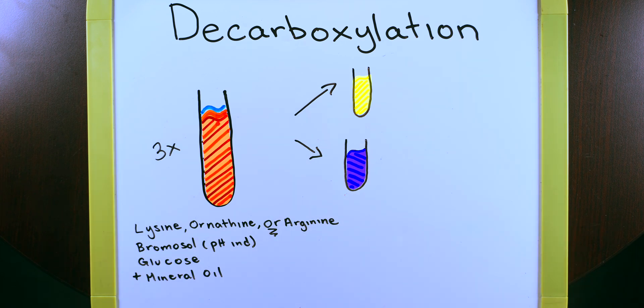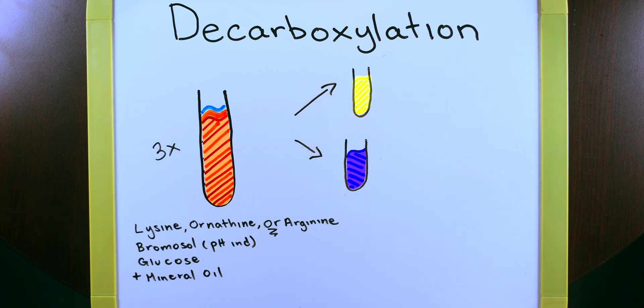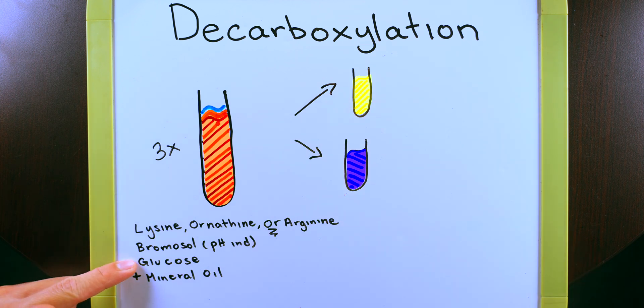If you have a yellow color change, this indicates to us that the glucose was broken down, but the amino acids were not. So one of these three amino acids that correspond to this yellow test tube was not broken down, but the glucose here was.